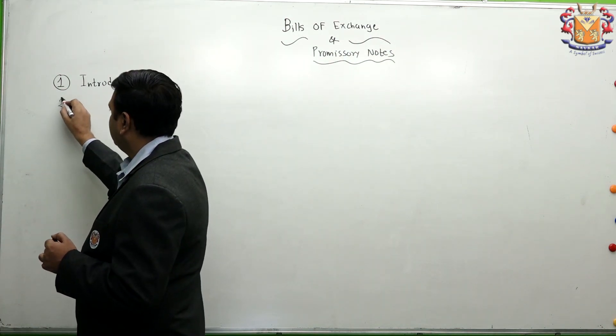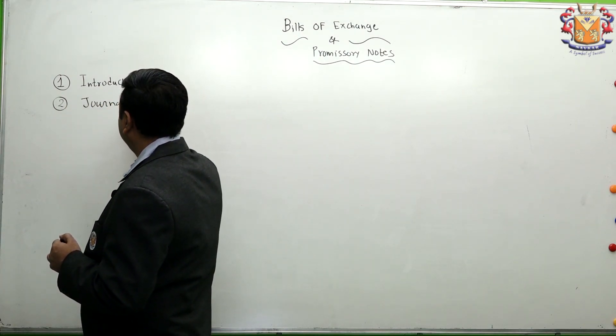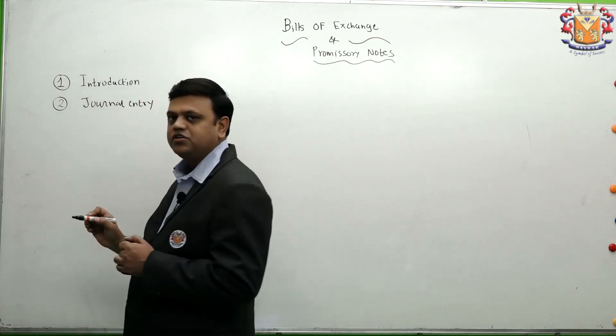Second part is the journal entries of the topic. As this topic belongs to accounting, it will be incomplete without the journal entries.